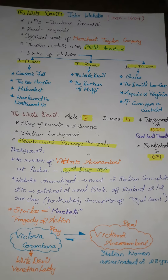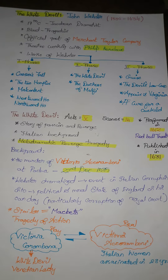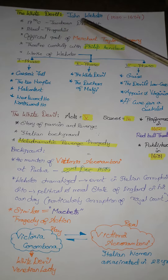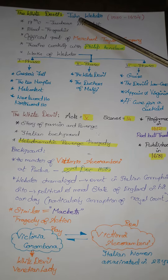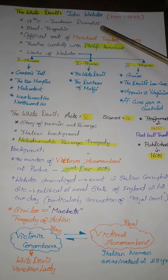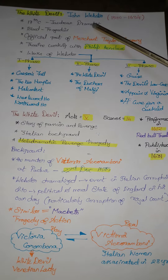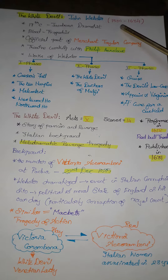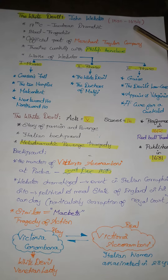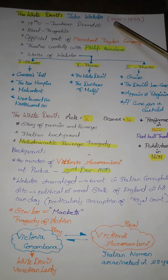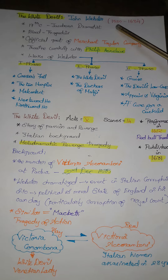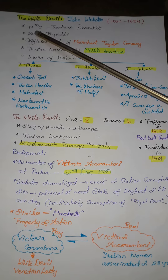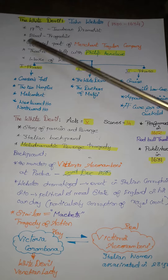Hello learners, this is Bharti Satish. Today we are going to know about The White Devil written by John Webster. John Webster belongs to the age of 16th century and early 17th century, 1580 to 1634, and was a 17th century Jacobean dramatist.